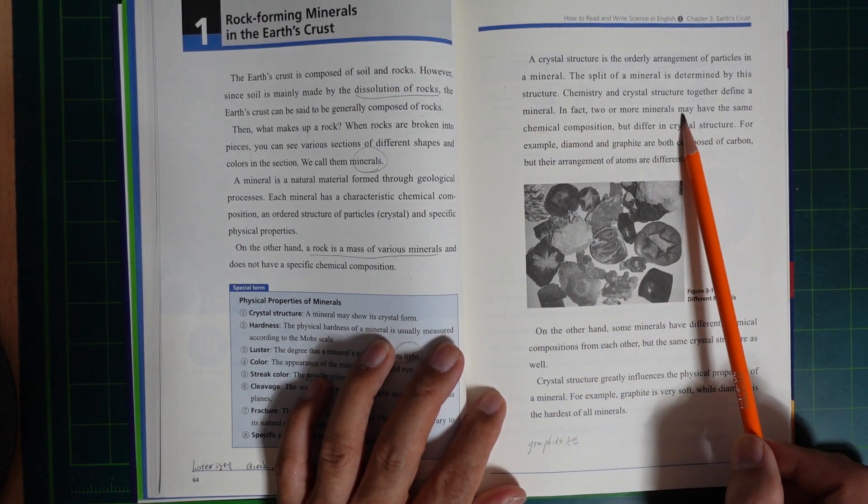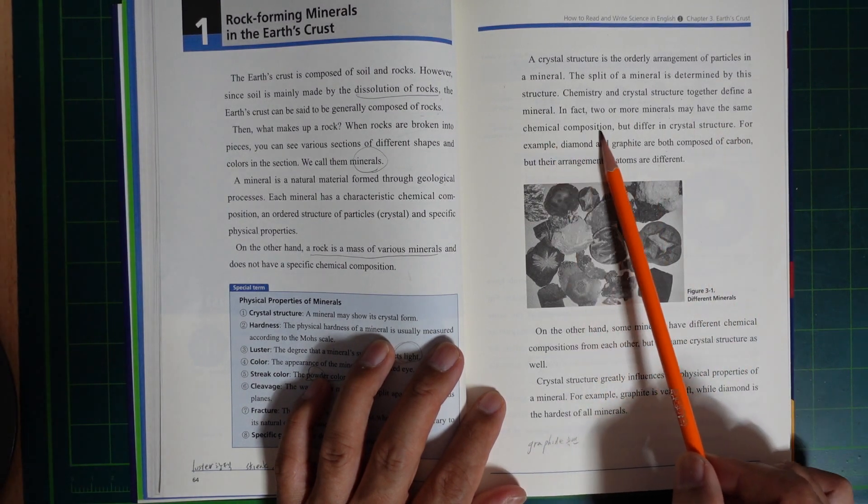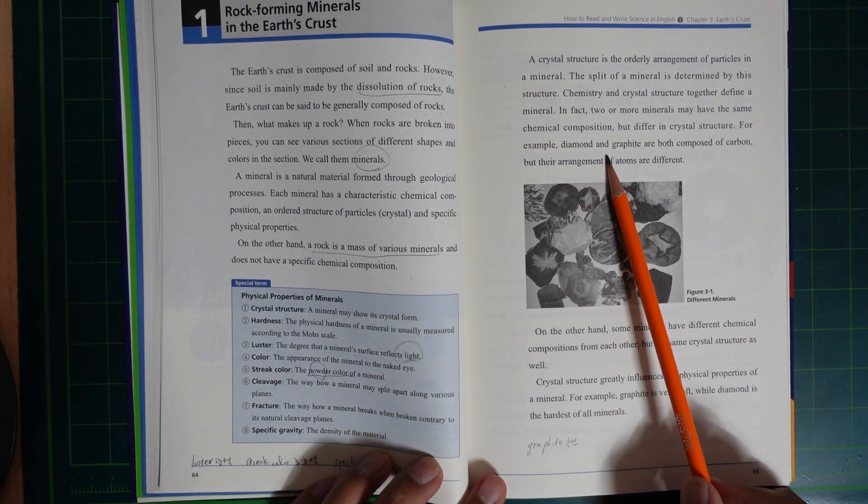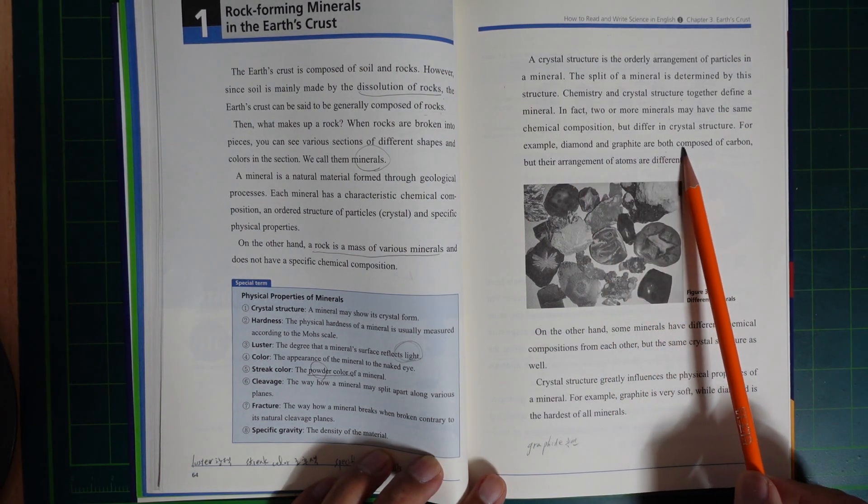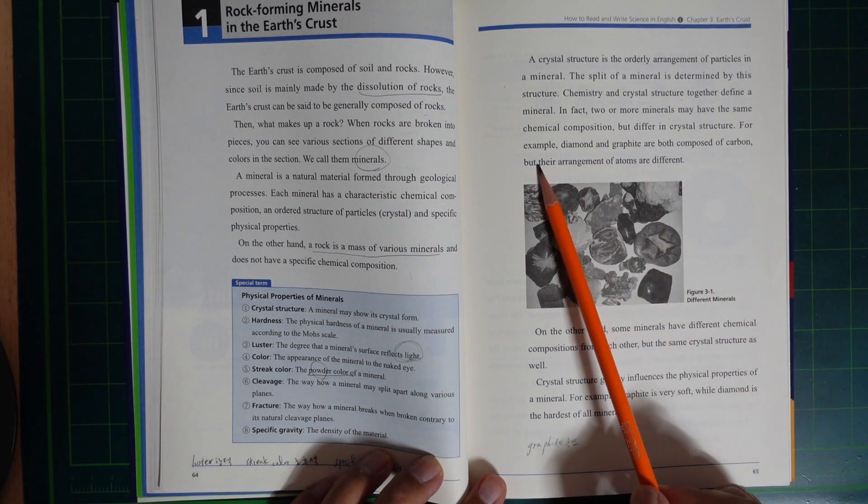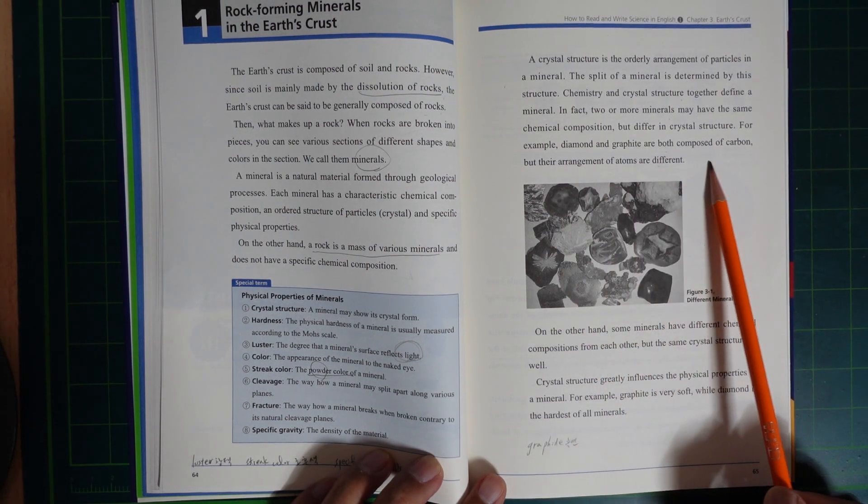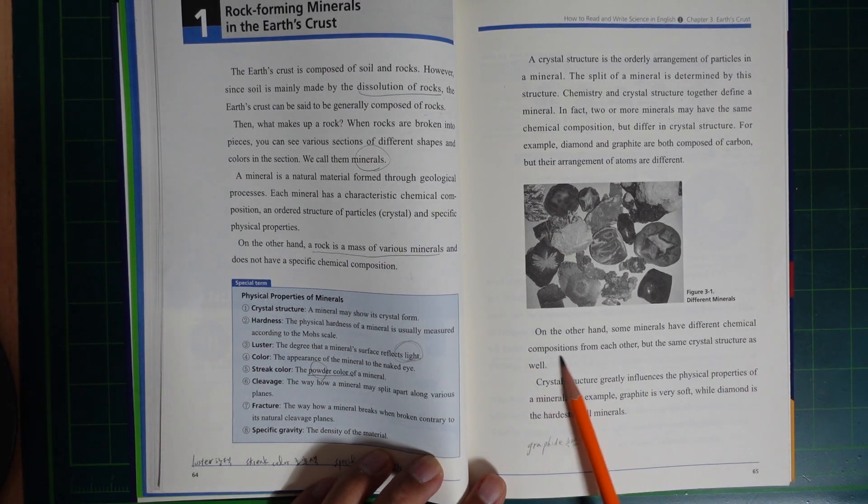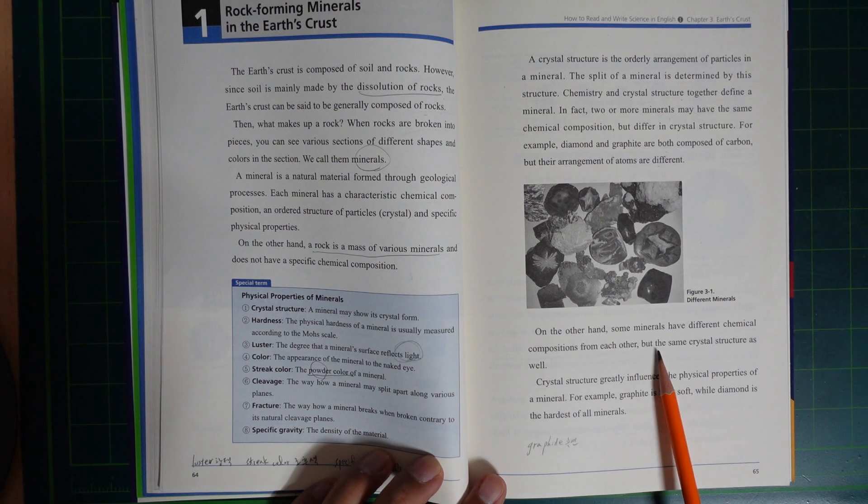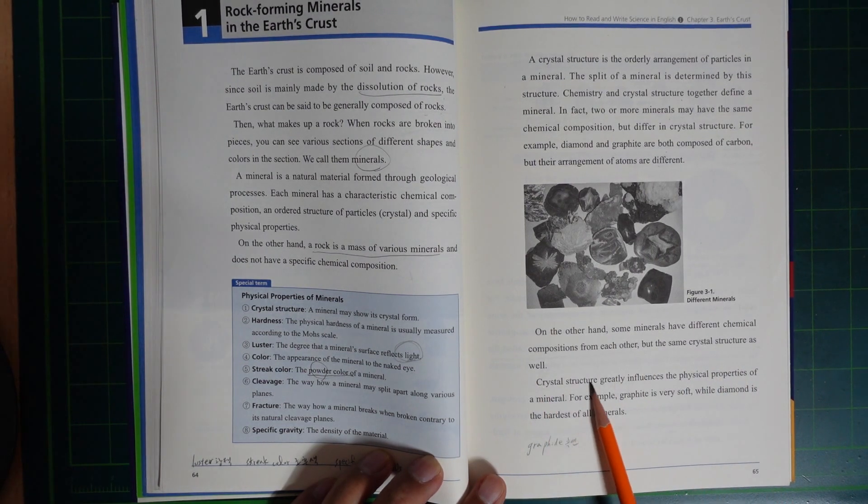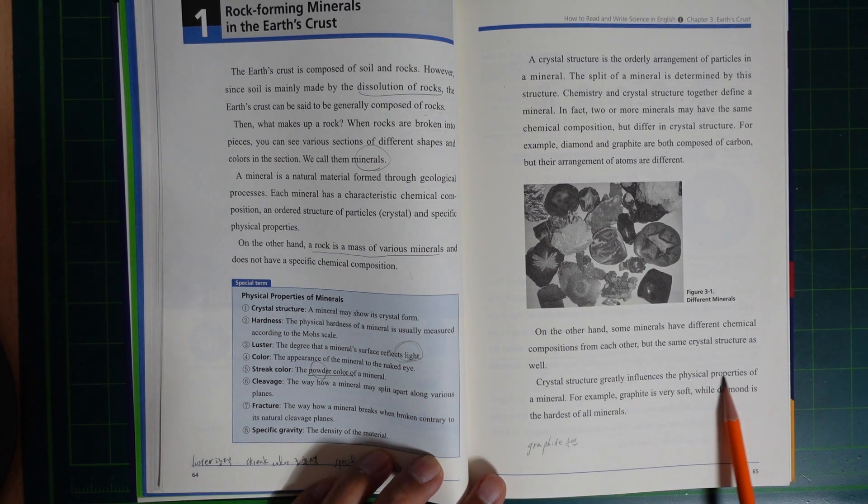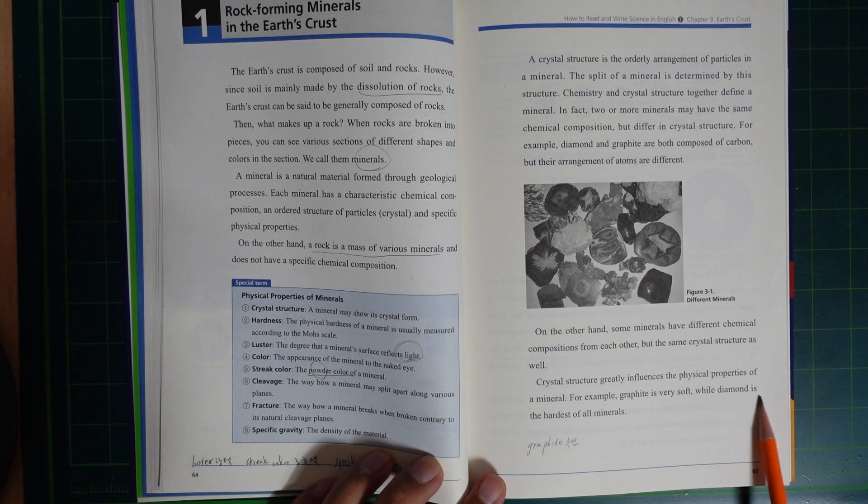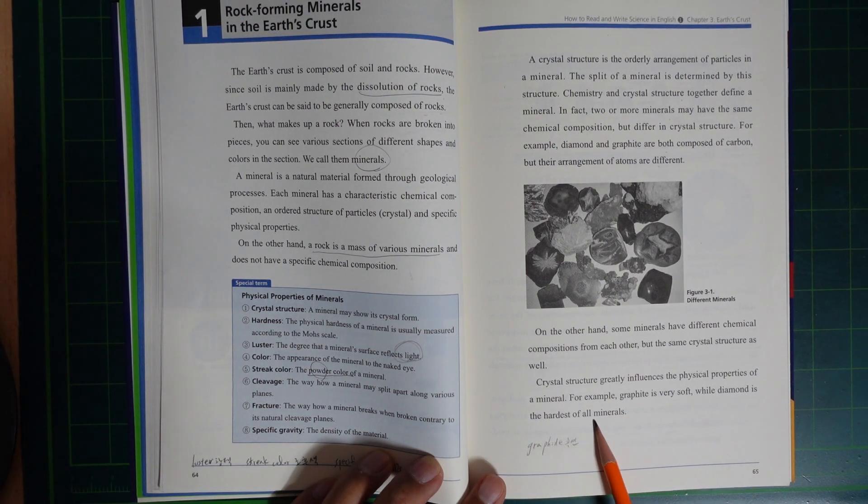In fact, two or more minerals may have the same chemical composition but differ in crystal structure. For example, diamond and graphite are both composed of carbon but their arrangement of atoms are different, making them different minerals. On the other hand, some minerals have different chemical compositions from each other but the same crystal structure. Crystal structure greatly influences the physical properties of a mineral. For example, graphite is very soft, while diamond is the hardest of all minerals.